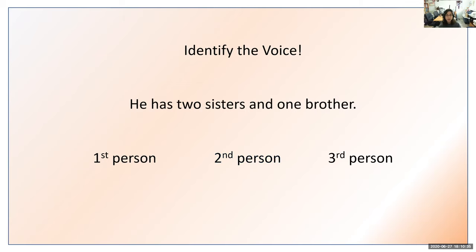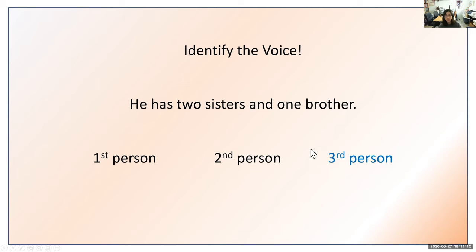Next one: He has two sisters and one brother. Is this first person, second person, or third person? He is the subject, and looking at our chart of pronouns, he falls under third person. So it's third person. It didn't say you have two sisters, it didn't say I have two sisters — it said he, and he falls under the category of third person.